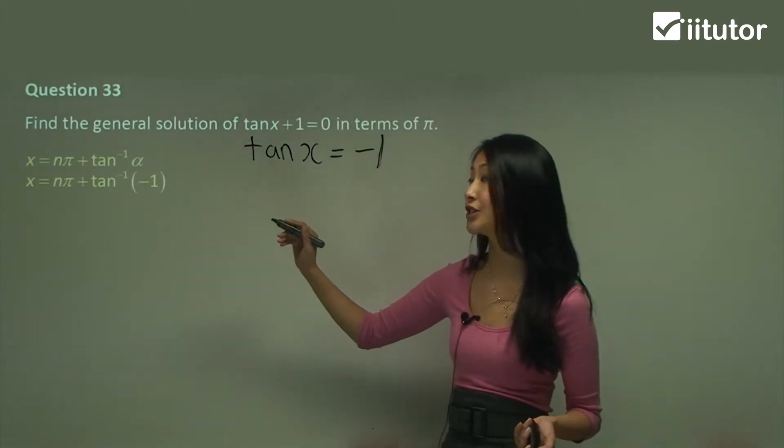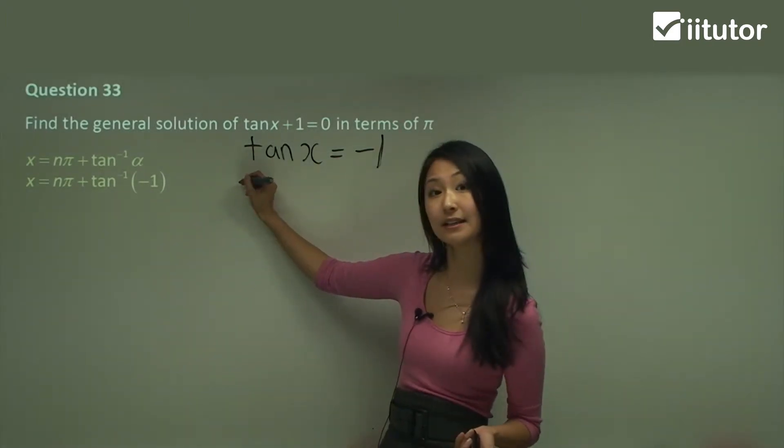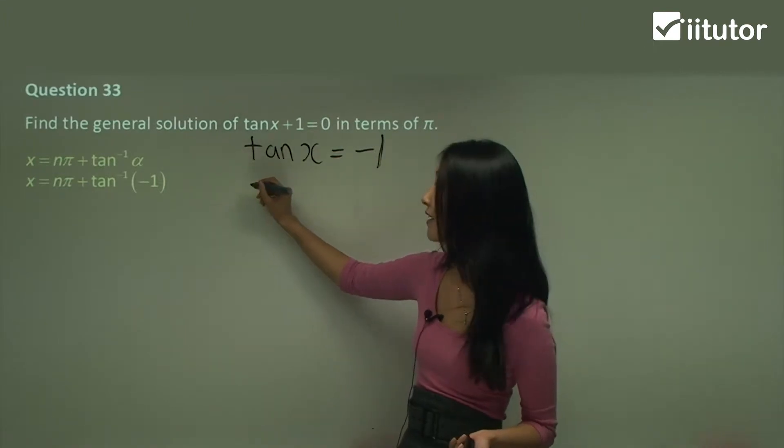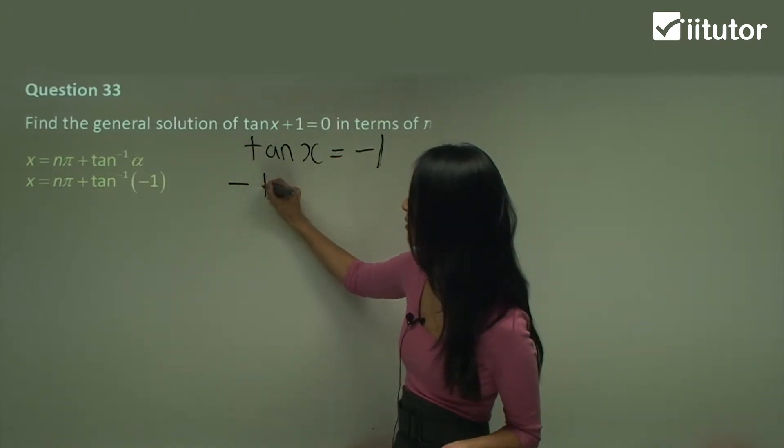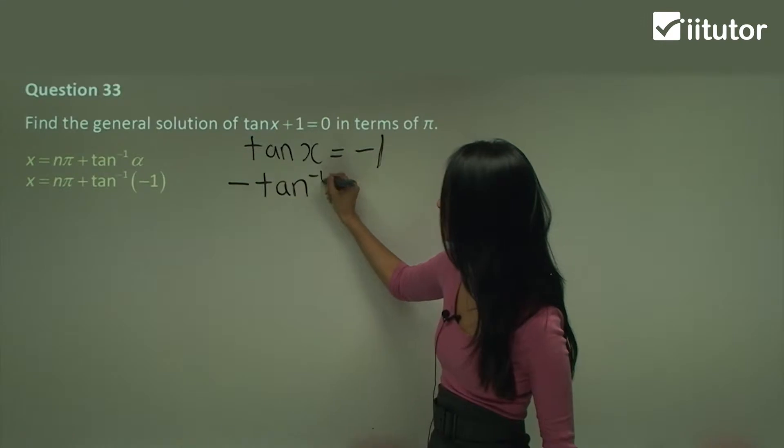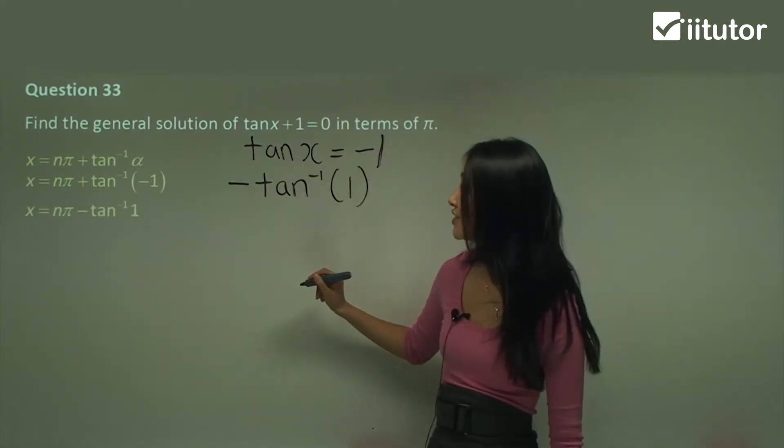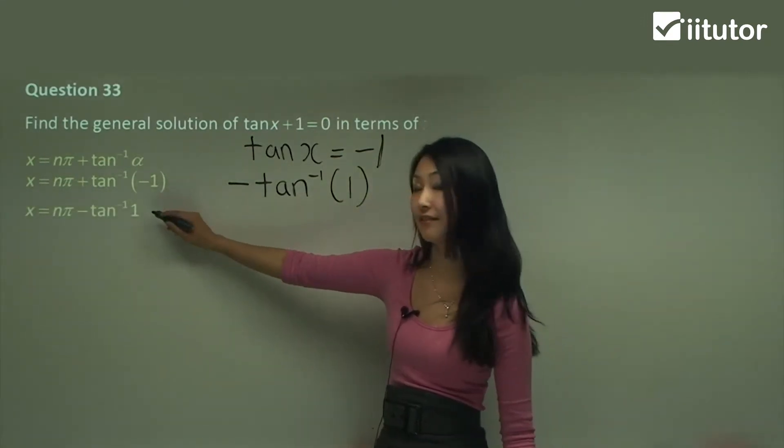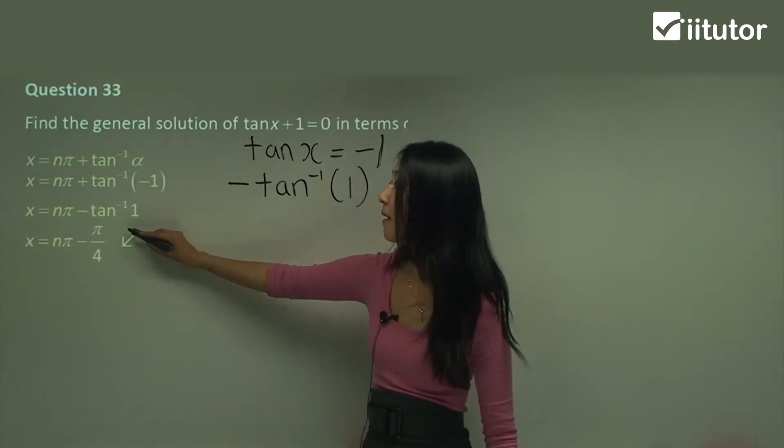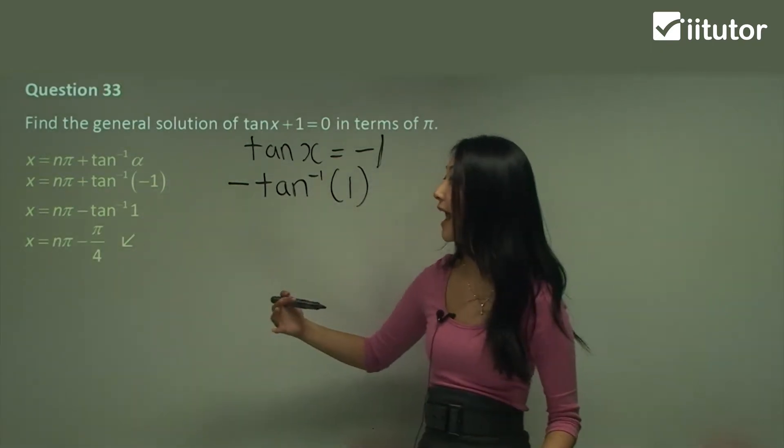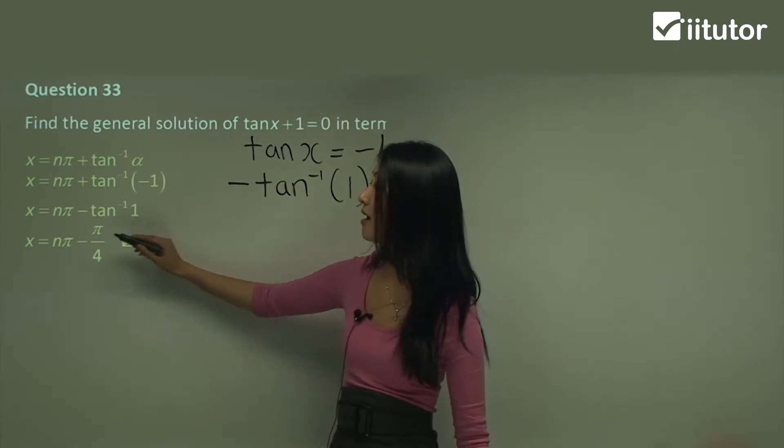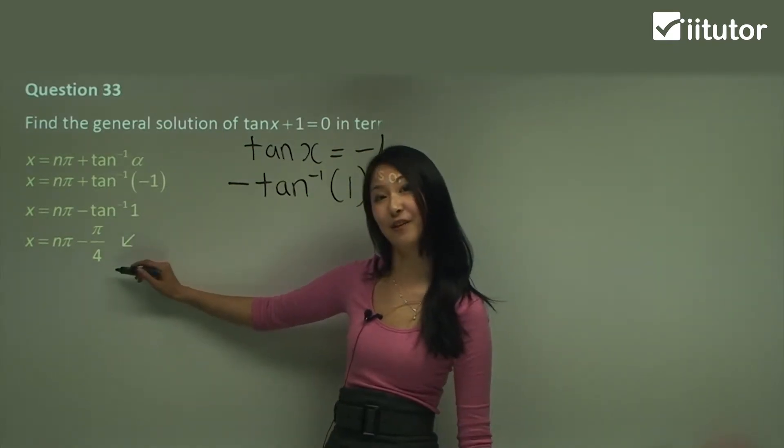The first thing we want to do is remove the negative from that. So you know how you can take the negative out of one? That is just going to be negative of that, and that's pi on four. So x just equals n pi minus pi on four.